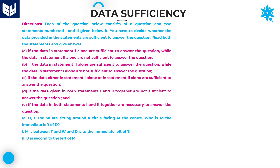Here the question belongs to sitting arrangement. M, D, T, W are sitting around a circle facing the center. Total 4 members are there. And given that these 4 members are sitting around a circle and all 4 members are facing the center. We need to draw the diagram like this.